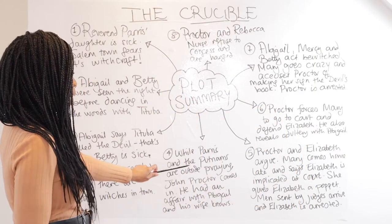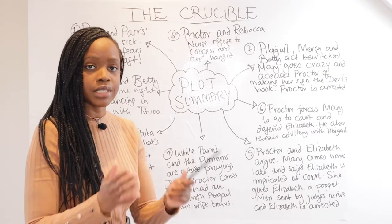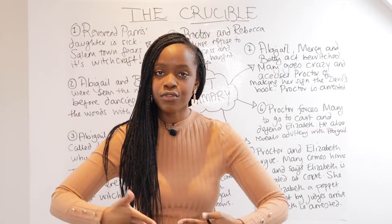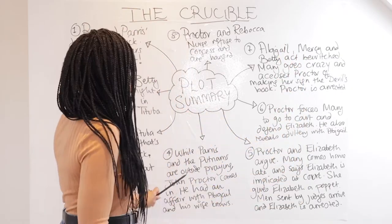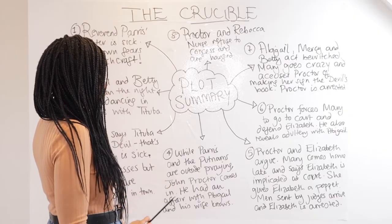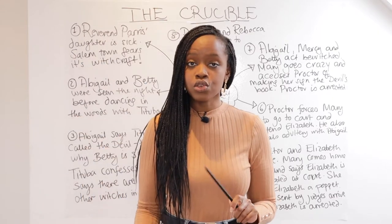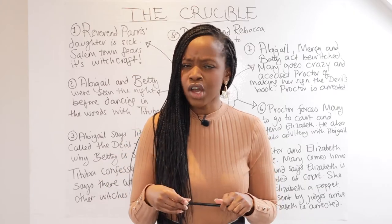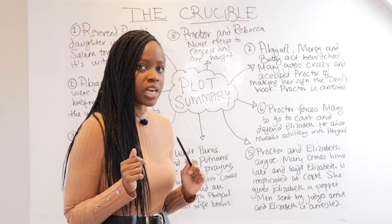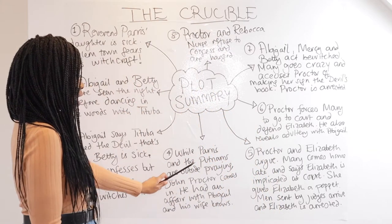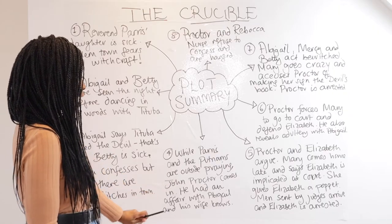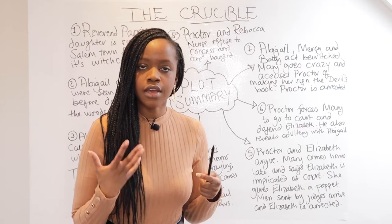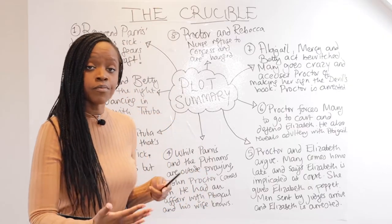While Reverend Parris and the Putnams go outside to pray for Betty's health and for witchcraft to be removed from Salem, another key character, John Proctor, comes in. We learn that Abigail used to work for the Proctor household and was dismissed under very mysterious circumstances. Now we learn why — Abigail and John Proctor had an affair.